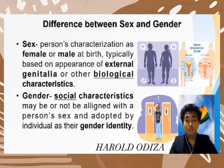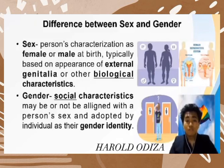Sex refers to biological characteristics such as reproductive organs, chromosomes, hormones, and so on. Gender refers to the socially constructed characteristics of women and men — such as norms, roles, and relationships between groups — which may or may not be aligned with a person's sex. Gender varies from society to society and can be changed.